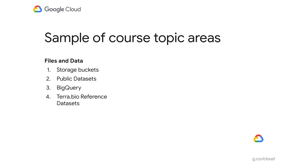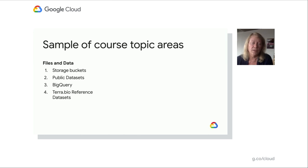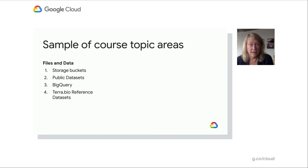Drilling into the highlights of what my course covers, it's really designed to be consumed in the way that you actually work with the cloud. There is a level zero for setting up your account and setting up cost control. Level one is files and data. I cover core services such as Google Cloud Storage buckets, public data sets that are available such as 1000 Genomes and other genomics data sets with restricted access, and services like BigQuery, which provides serverless SQL querying on top of files and can be used for genomic file types such as VCF or variant calling format. I also cover higher level services such as Terra.bio reference data sets.